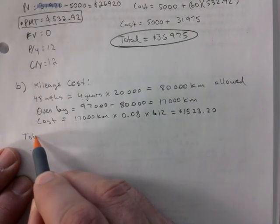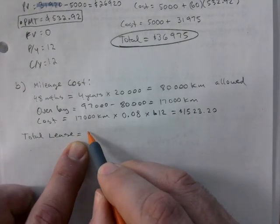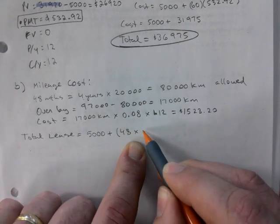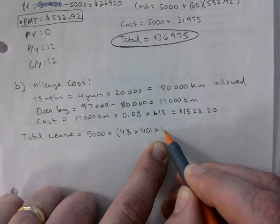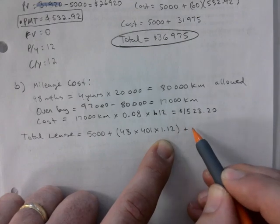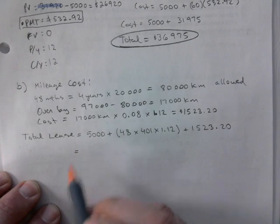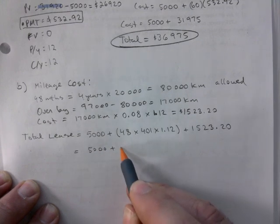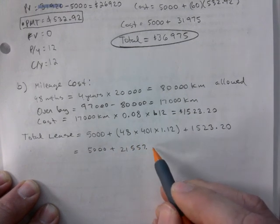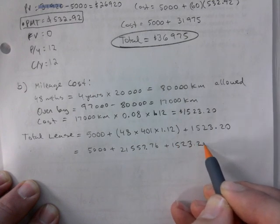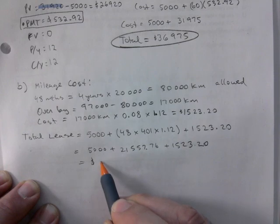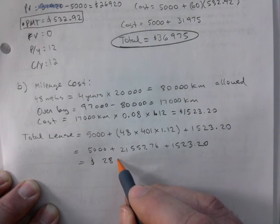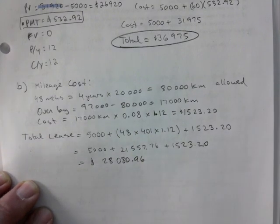So total lease would be the down payment plus you made 48 payments. In this case, it says $401. You're going to smack the taxes on there, and we'll just add the mileage cost to this. This ends up being $5,000 plus $21,557.76 plus $1,523.20. Total lease would be $28,080.96. That's just the lease.